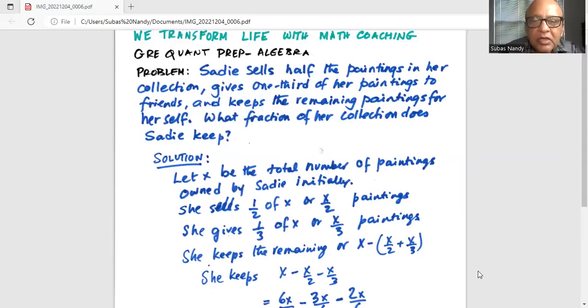Let X be the total number of paintings owned by Sadie initially. She sold half of X, or X over 2 paintings. She then gives one third of X, or X over 3 paintings. So she keeps the remaining. What does she keep?